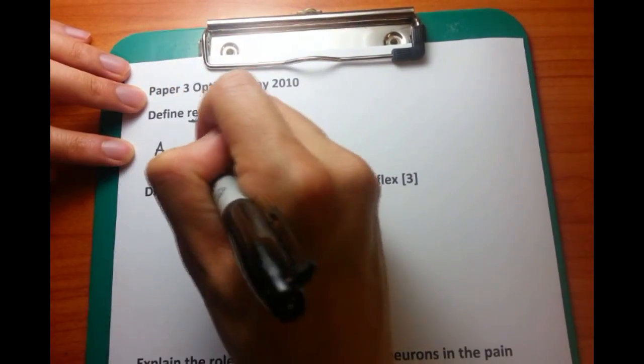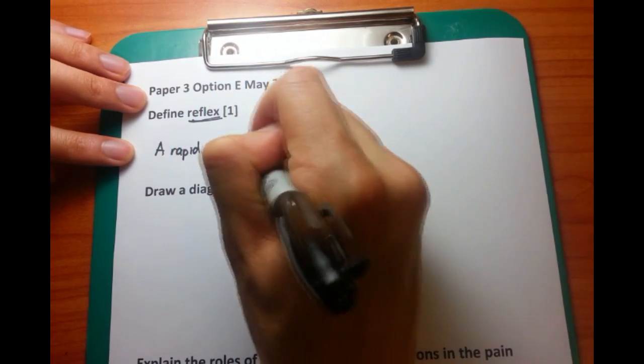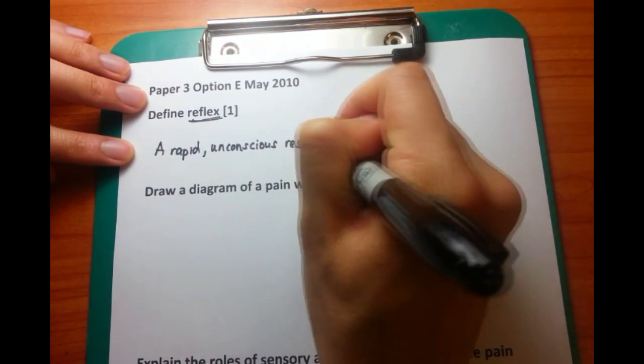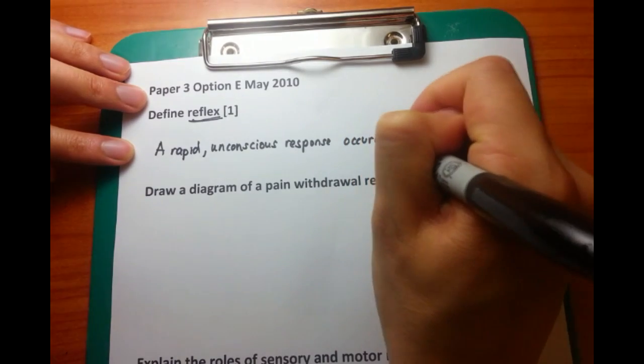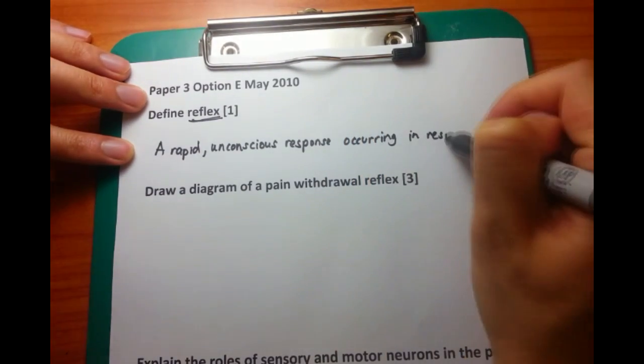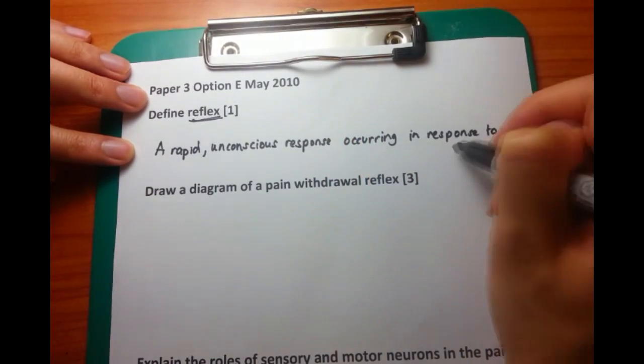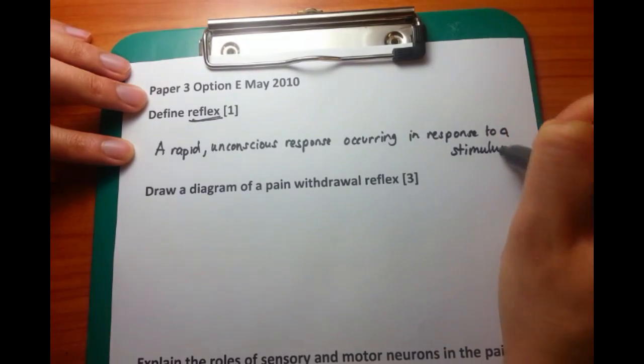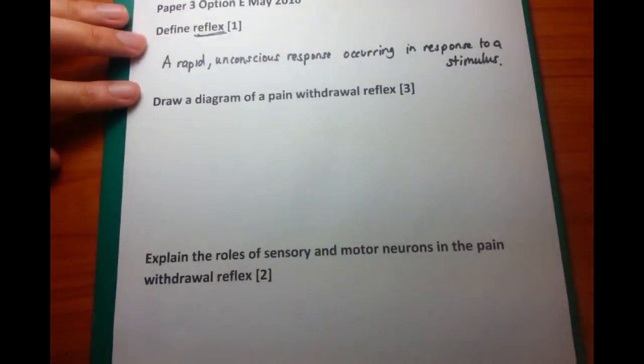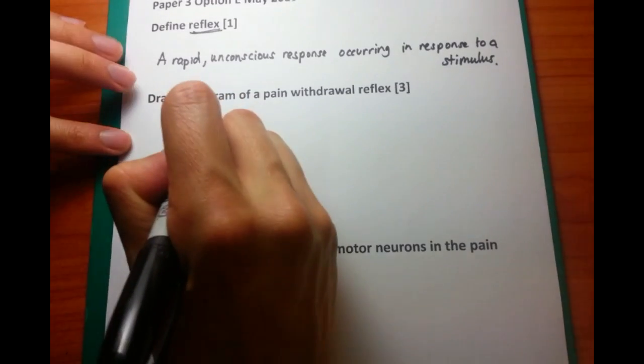Unfortunately with some of these definition questions you just need to know them back to front. And while I don't know them back to front like I did before, I now know that it's a rapid unconscious response occurring as a result of a stimulus, or a response to a stimulus. And I've said response twice, but that's okay. Just need to know these definitions.